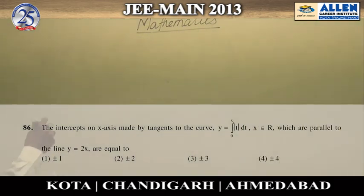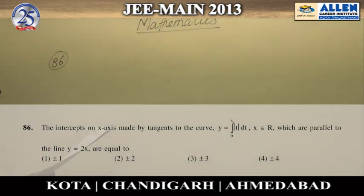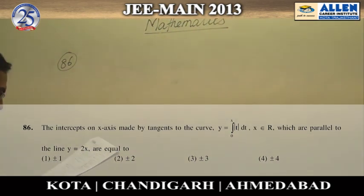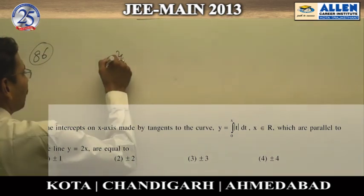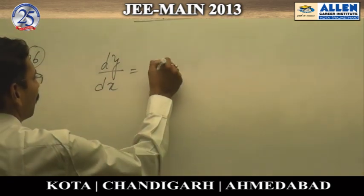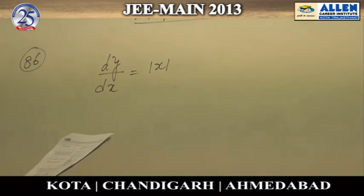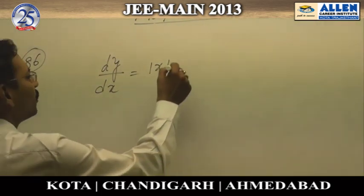In question number 86, we have to find the intercept made by the tangent. First, we will calculate the equation of the tangent. We calculate the derivative dy/dx equals mod x, and since the tangent is parallel to y equals 2x, the slope will be 2.